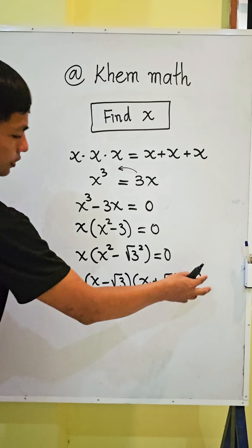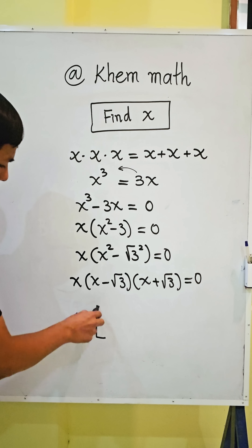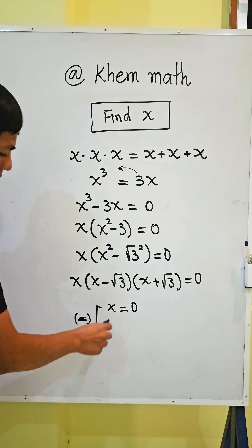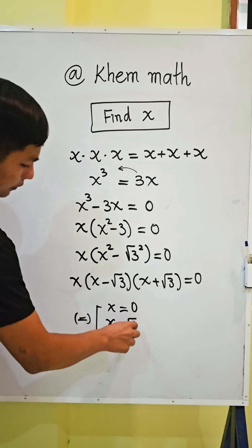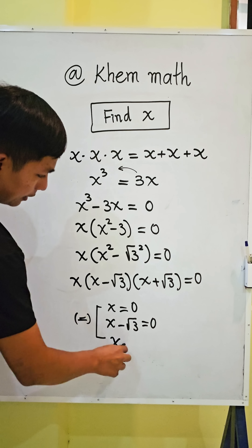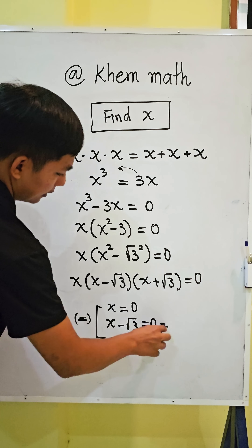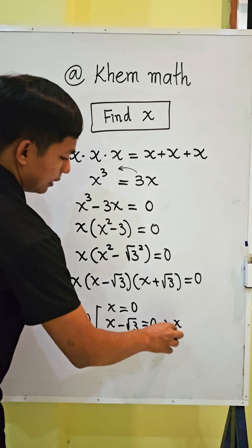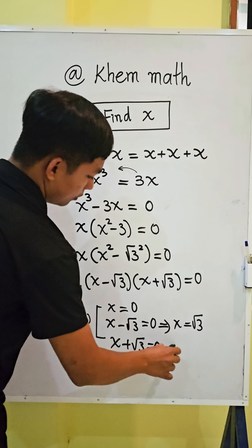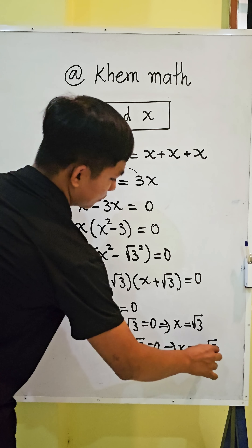So, if each factor equals 0, we get: x equals 0; x minus square root 3 equals 0, giving x equals square root 3; and x plus square root 3 equals 0, giving x equals negative square root 3.